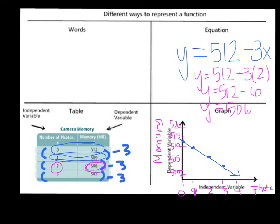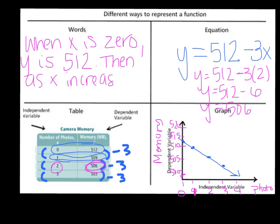And then in words, this is how you would say this. When x is 0, y is 512. Then as x increases by 1, because that's what it's doing, y decreases by 3.